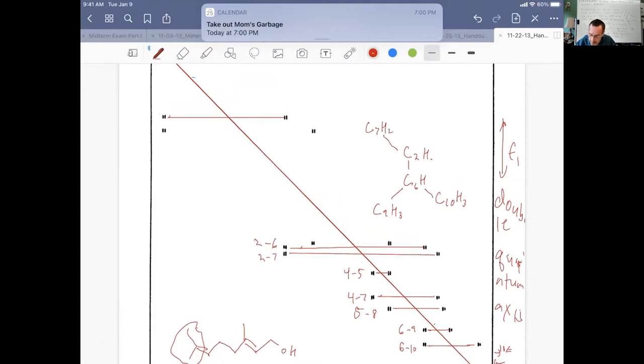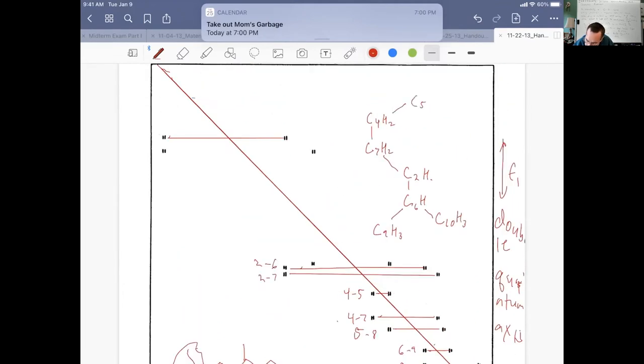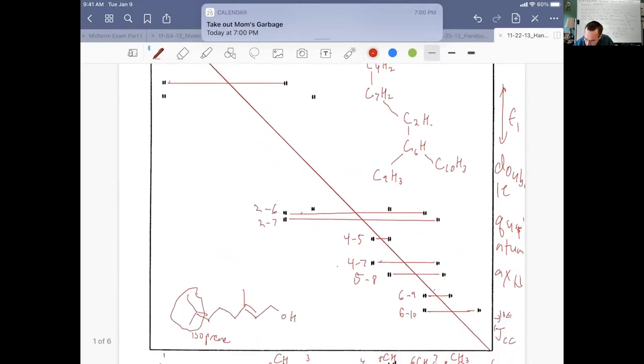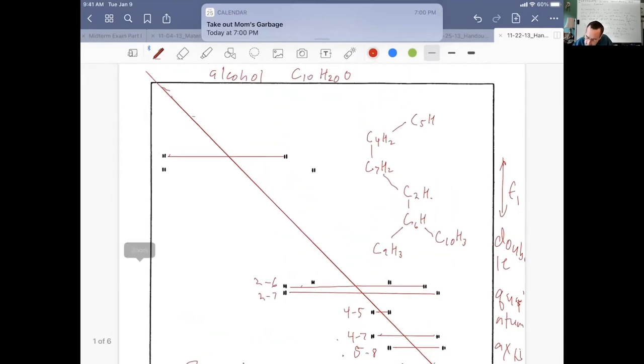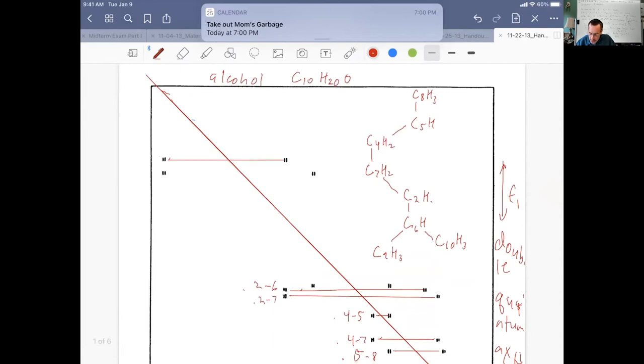2 connects to 7, and 7 is a CH2 group. Now I can continue to build up my puzzle. 2 connected to 6. 7 connected to 4. So 7 to 4, C4H2. C4 is also a CH2 group. And then 4 connects to 5, and 5 is a CH group. So C5H. And 5 also connects to 8. So C8 is a methyl group.